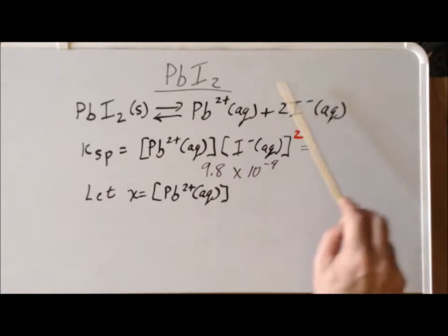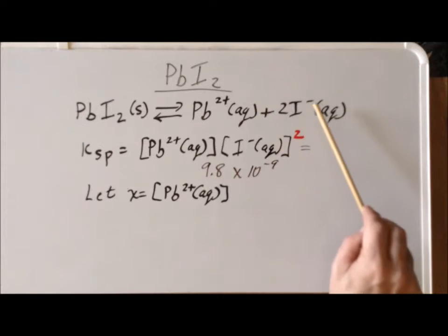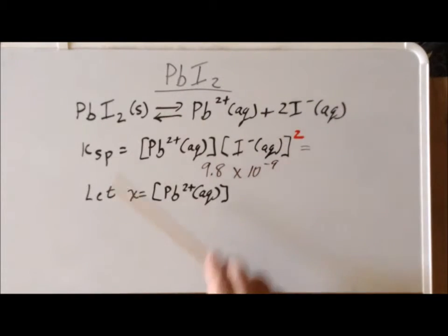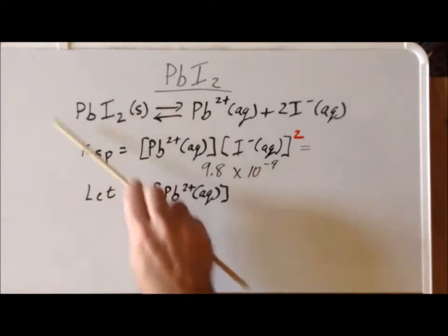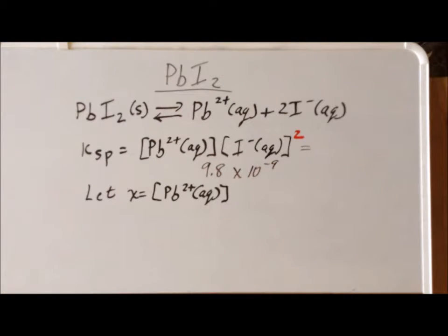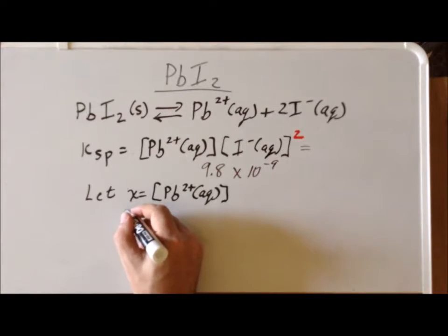This tells us that the concentration of iodide, once we dissolve, is going to be twice the concentration of lead iodide because the only possible sources of these ions are from lead iodide that has dissolved. Therefore, we can set 2x as the concentration of iodide.